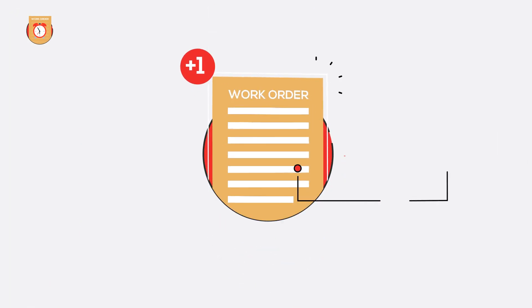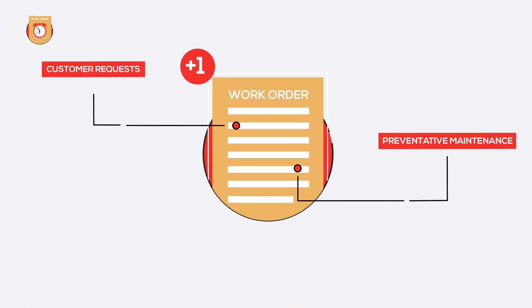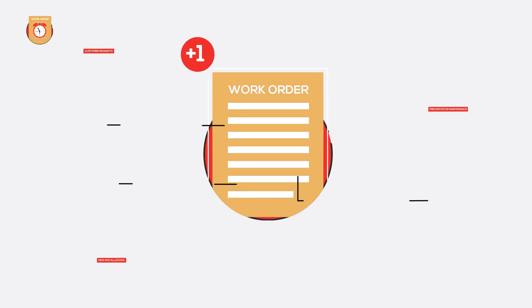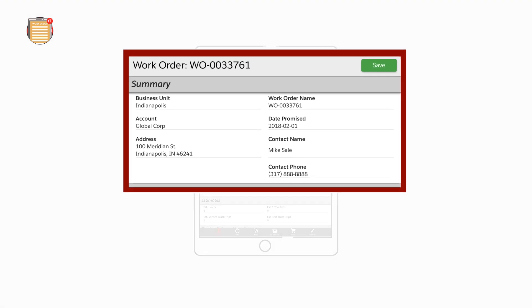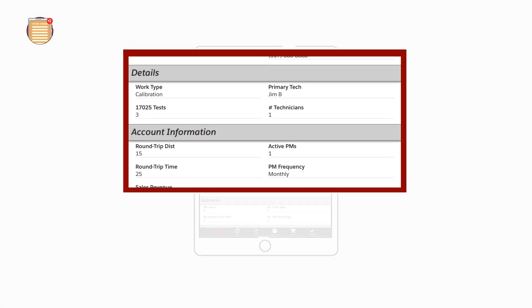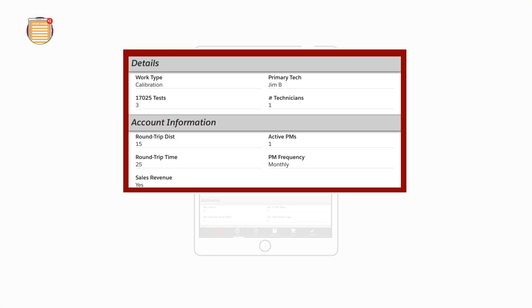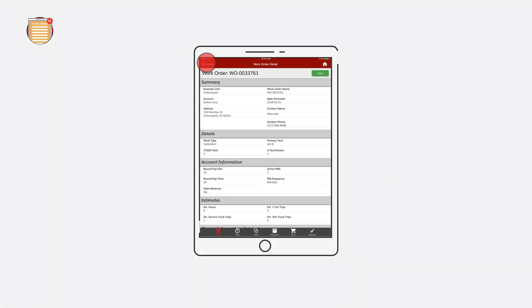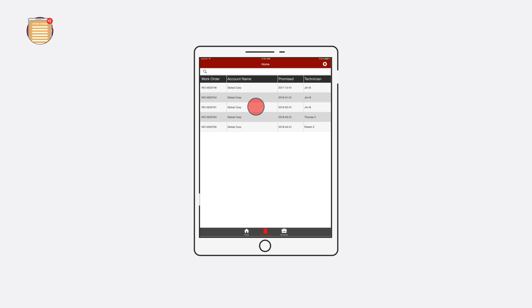Work orders are created based on preventative maintenance contract schedules, customer requests, or new installations. Once the work order is ready, it gets scheduled and assigned to a technician. Technicians are able to see all their upcoming work orders on their tech app.